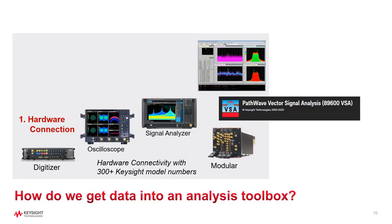We talked about the broad classes of instruments likely to be used for pulse analysis. Now, let's expand our notion of how we get data into a pulse analysis toolbox. The first option is through a hardware connection. With the PathWave Vector Signal Analysis tool, you can connect to over 300 Keysight model numbers, ranging from digitizers to oscilloscopes to signal analyzers and even modular instruments. Once you have connected, the software feels like an extension of the instrument, so you can trigger on RF bursts of power and then later record your acquisitions to a binary file for post-processing.